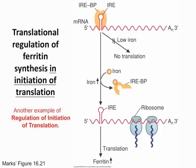Another example of regulation of initiation of translation involves ferritin mRNA, which has an iron response element (IRE). When the IRE-binding protein (IREBP) doesn't have bound iron, it binds to IRE and prevents translation. If iron is present, it causes IREBP to dissociate, and then mRNA can be translated. The mechanism itself is less important than knowing this is another way to regulate initiation of translation.